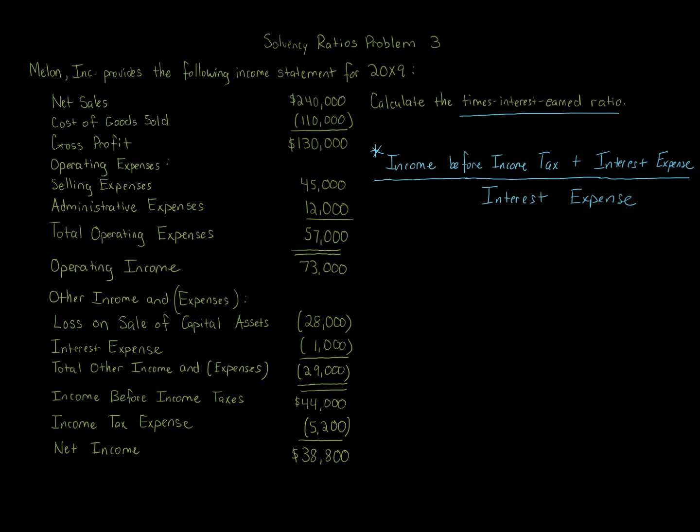From a lender's standpoint, this ratio shows you how covered the interest expense is relative to other outstanding interest obligations. If you're a lender and a business already has other creditors, you have to take their claims into account as well. The real issue here is that numerator, as mentioned earlier, because income statements can be presented in different ways.